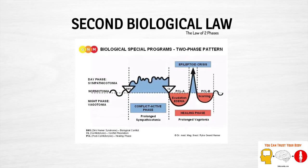The second biological law addresses what actually happens in this program. We have our normal day-night rhythm — normotonia — where during the day we are more sympathetic active, and in the evening around 5 p.m. we switch over to vagotonia, the rest and digest phase. Once the DHS happens — the Dirk Hamer Syndrome, which is the conflict shock itself — the person moves into a prolonged state of sympathetic activity, or conflict active.